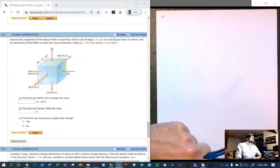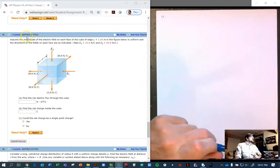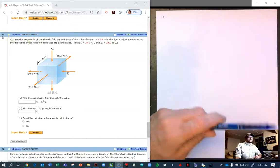So for this problem we have a cube. I should mention that this is problem number 32 in chapter 24 of Sirway and Jewett, the ninth edition. This is problem number 11 for my students.